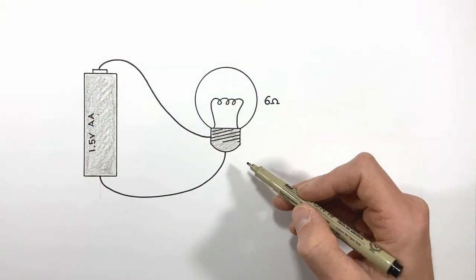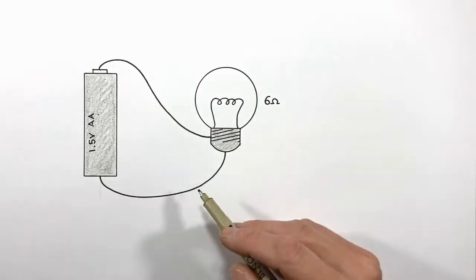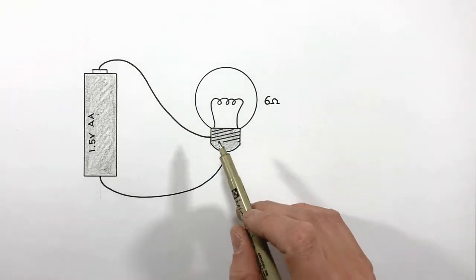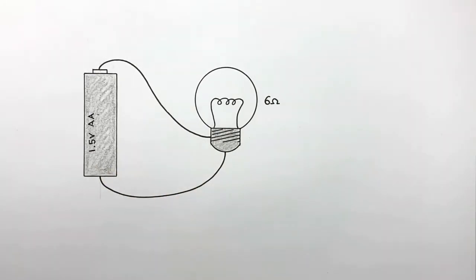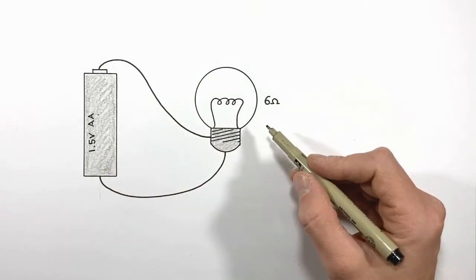Okay, today we're going to talk about the power which is used up or dissipated within a circuit. To do that, we're first going to take a look at Ohm's law to understand exactly what's happening in this particular circuit. Here we have a 1.5 volt battery which has been hooked up to a six ohm light bulb.